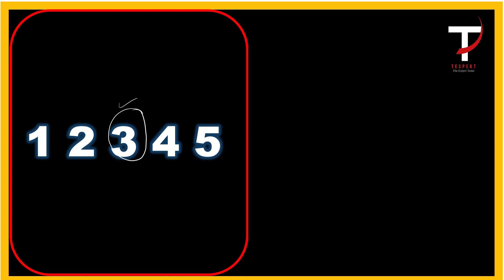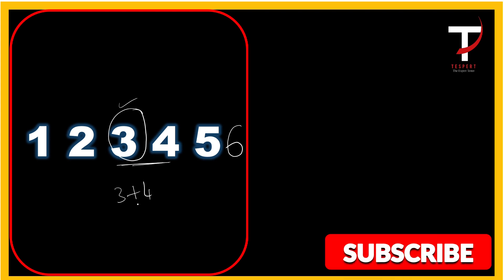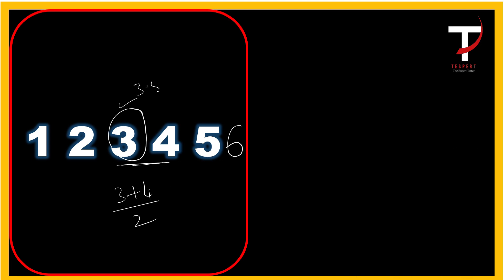If we have an even number of terms, we have two middle terms. We take the average of those two middle terms to get the overall average. For example, if we add a sixth term, we now have six terms — an even number. The two middle terms are 3 and 4, so the average is (3 + 4) divided by 2, which equals 3.5.